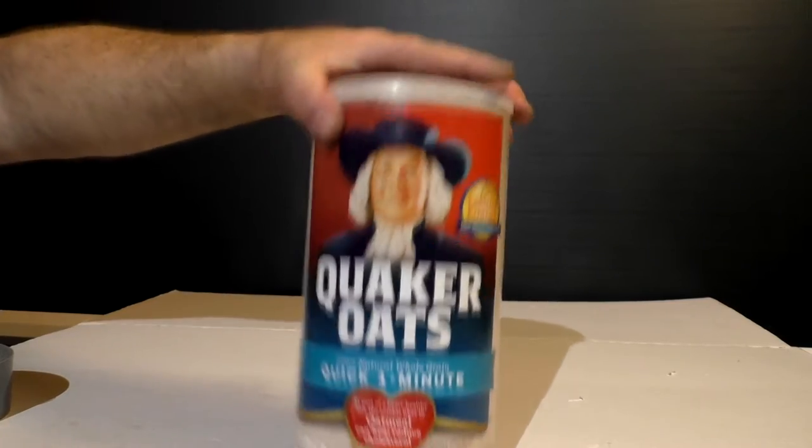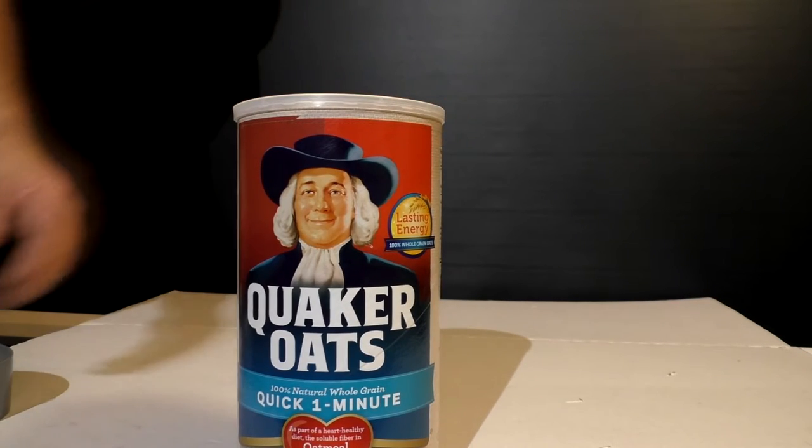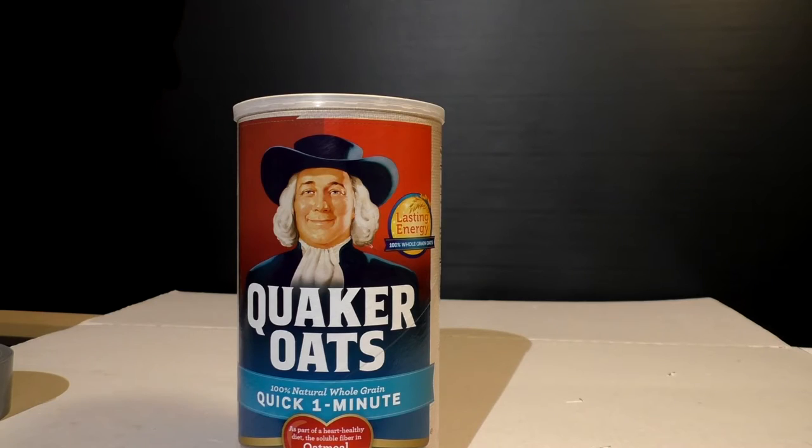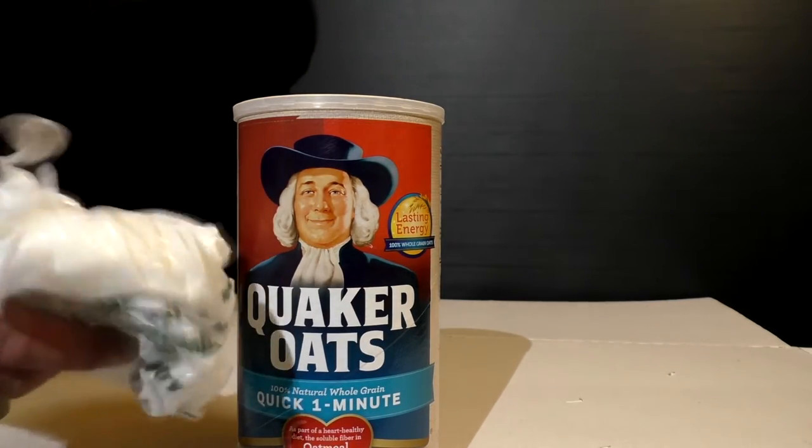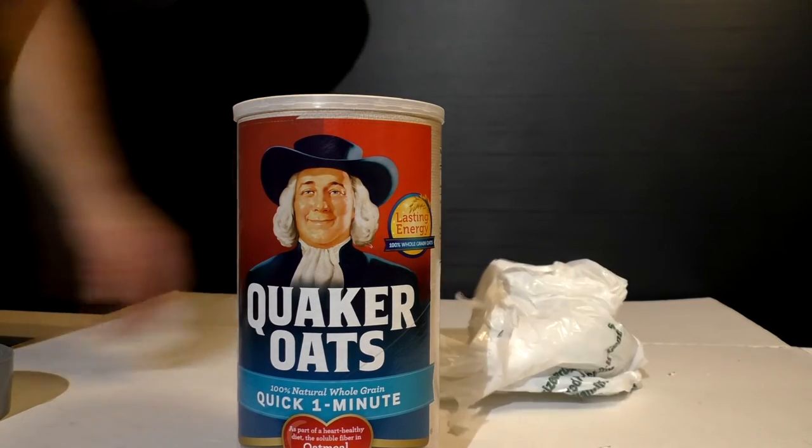Starting out, you go to Walmart or wherever and buy a big can of Quaker Oats oatmeal. The components you're going to be needing are quite inexpensive and really not much to it. A plastic bag, preferably maybe even a garbage bag or something but a little thicker one like from Menards or something.